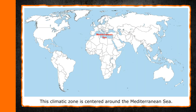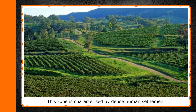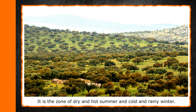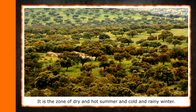Mediterranean. This climatic zone is centered around the Mediterranean Sea. This zone is characterized by dense human settlement and excellent agricultural production. It is the zone of dry and hot summer and cold and rainy winter.